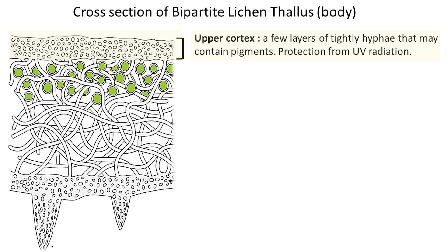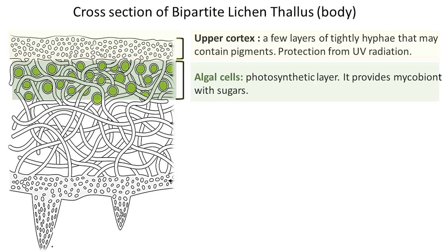This defensive approach shields the lichen from UV-related damage and may also regulate the amount of light that reaches the next algal photosynthetic layer. The algal cells contain chlorophyll and other pigments that capture light and use it to produce sugars and other organic compounds from carbon dioxide and water. These organic compounds are then shared with the fungal partner.